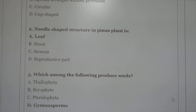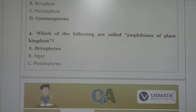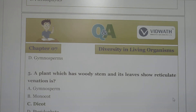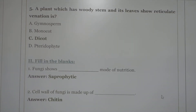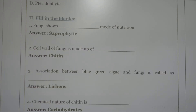Which of the following produces seeds — Pteridophyta, Bryophyta, or Gymnosperms? The correct answer is Gymnosperms. Which of the following are called the amphibians of the plant kingdom? The correct answer is Bryophytes. A plant which has a bushy stem and leaves showing reticulate venation is a dicot. Fungi show the saprophytic mode of nutrition. The cell wall of fungi is made up of chitin. The association between blue-green algae and fungi is called lichens.